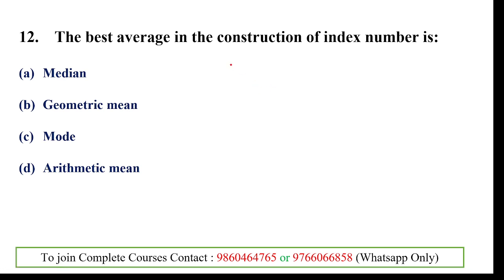Next question: the best average for the construction of index numbers is geometric mean. Index numbers are constructed to understand relationships between factors — for population, consumption, etc. While median, mode, and arithmetic mean give a simple average value, geometric mean calculates the root value of the data, making it best suited for index number construction.